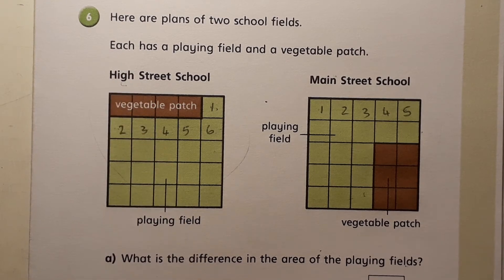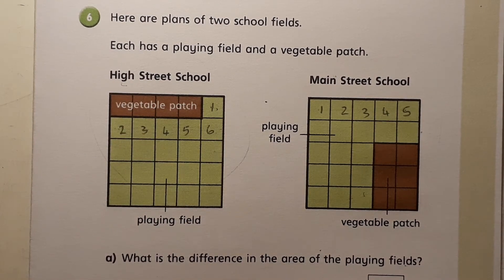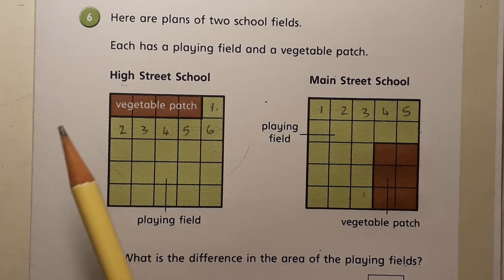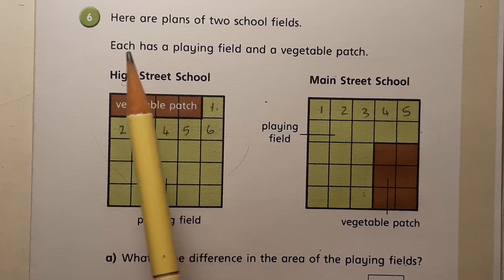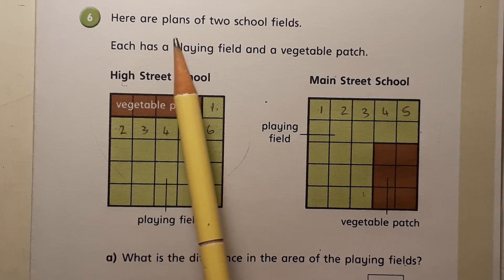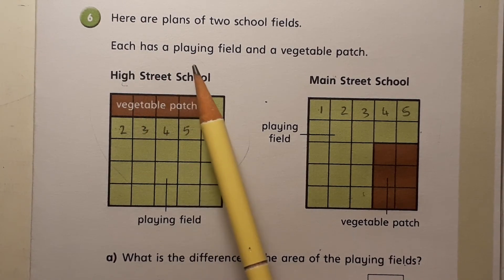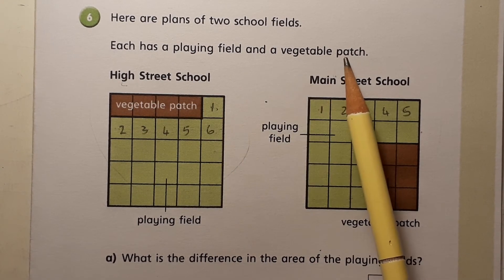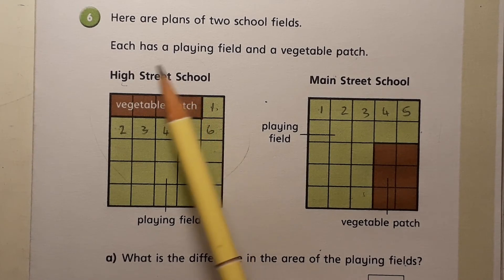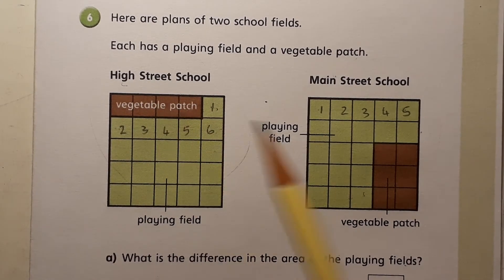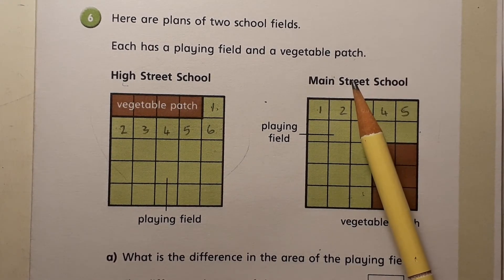And here we have question six. It's not hard, but it does have a lot of information to read and think about. So here are plans of two school fields. Each has a playing field and a vegetable patch. So this is High Street School and this is Main Street School.